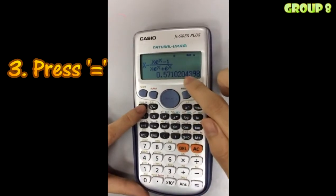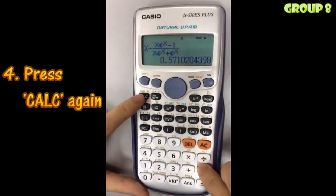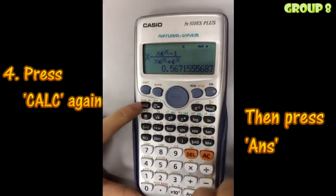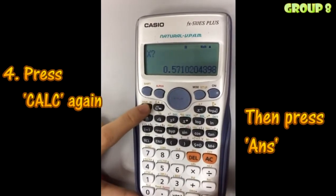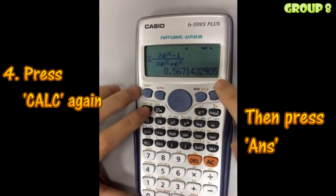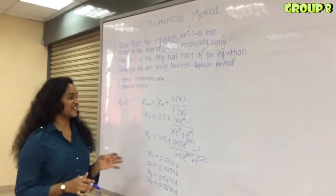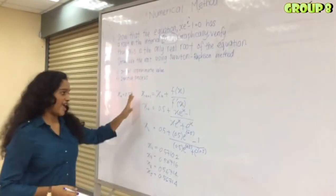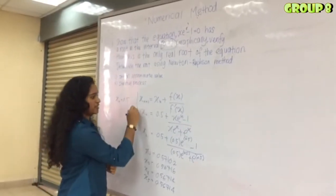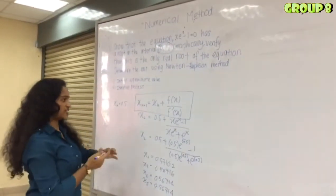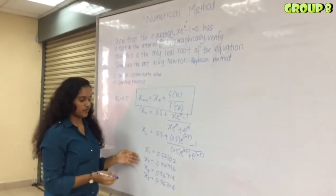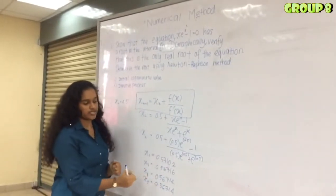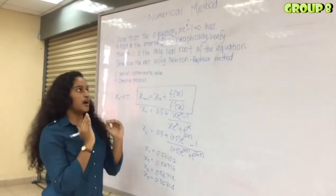You get the first answer x₂, then press calculate again for x₃, and again for x₄. The Newton-Raphson method finds the next values of x iteratively. The more iterations performed, the closer the decimal values become, and when values agree, we have found the root of the function.